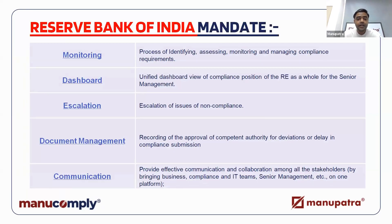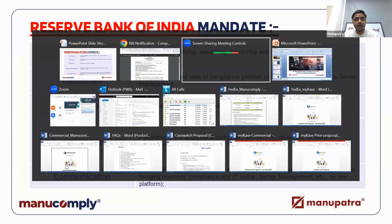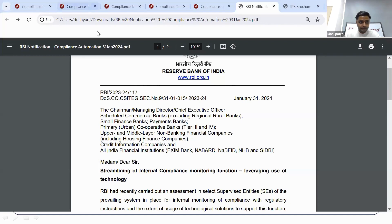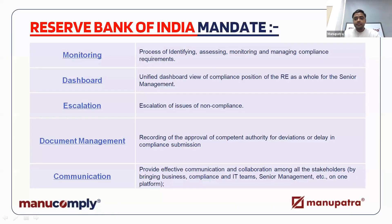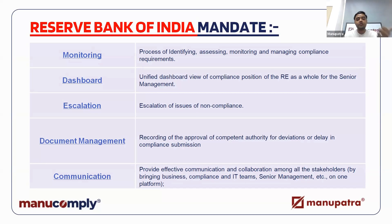These are the challenges we'll be talking about. The first RBI mandate is that you need to have a very comprehensive dashboard — so that higher management can keep track of all compliances, whether they are being done or not. The second is the escalation part. RBI said you need to have an escalation authority. If there's a compliance not completed on time, who all should get notified — particularly when that compliance might involve a huge penalty or even imprisonment.